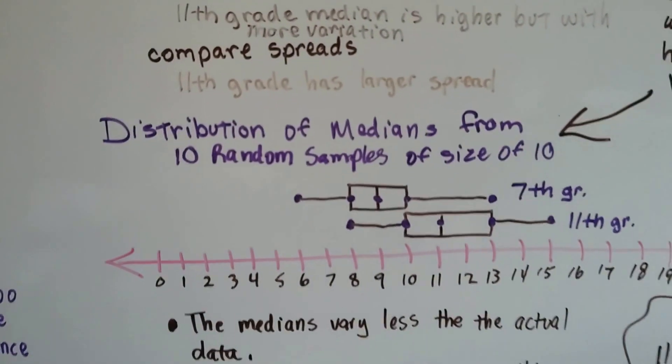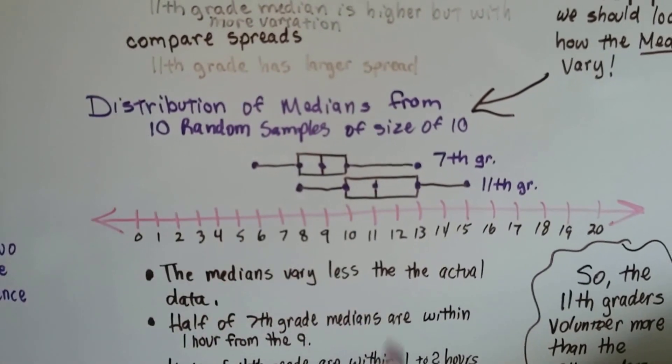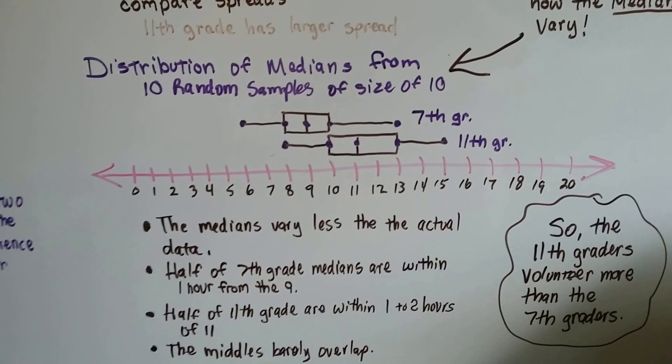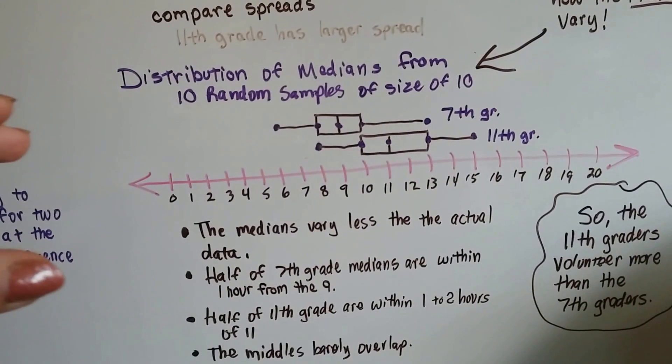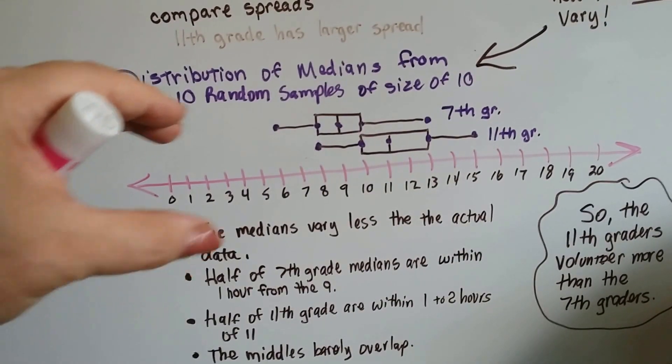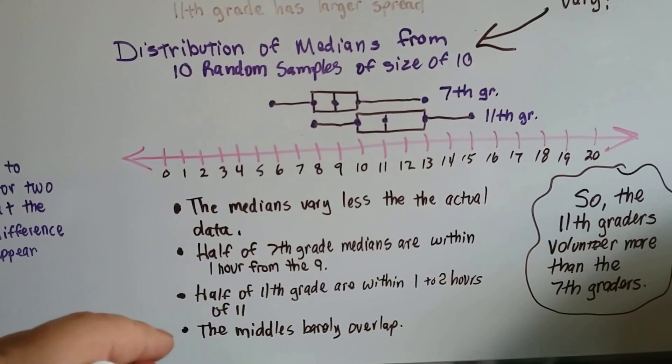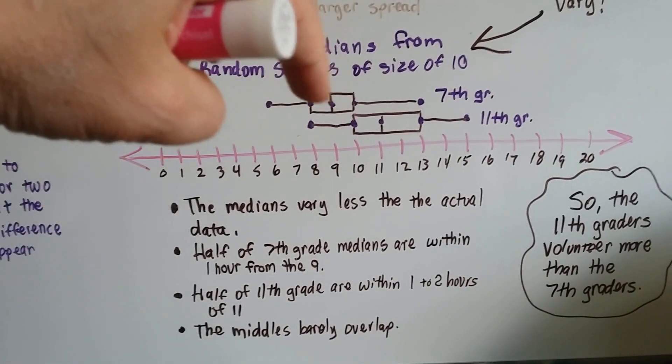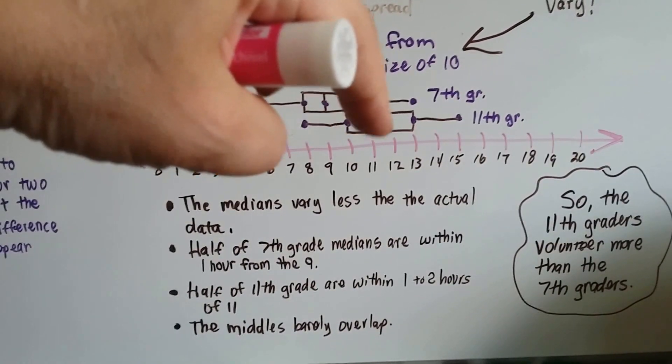To make an inference for the entire population, we should look at how the medians vary. So then we make a box and whisker plot for the medians. That really makes it stand out. The medians vary less than the actual data because we've honed in. We got information and then we got information from the information, so we're getting even tighter in our information.